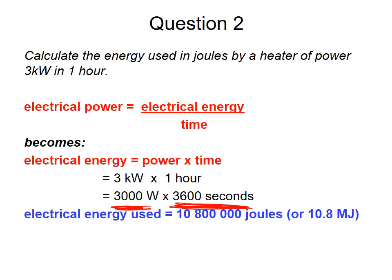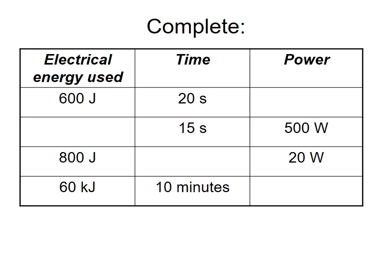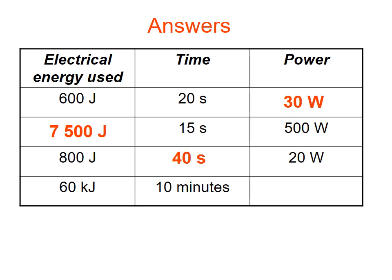Now complete the power table. The answers are: 600 divided by 20 gives 30 watts; 15 times 500 gives 7500; 800 divided by 40 gives 20 watts; and 60 kilojoules converted to joules over 10 minutes converted to seconds gives 100 watts. Hopefully you got 100% there.